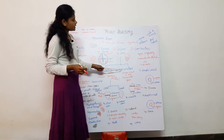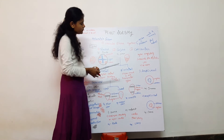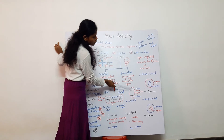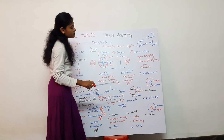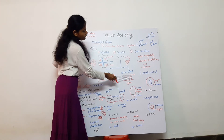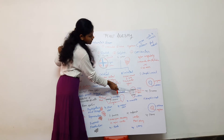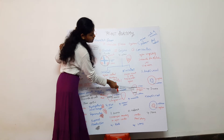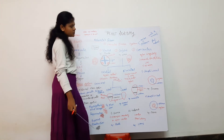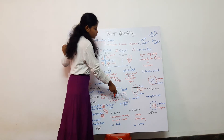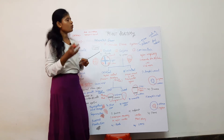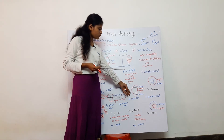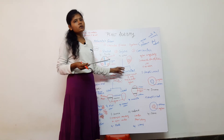The second type under conjoint is the bicollateral vascular bundle. Bi means two. In bicollateral bundles, phloem is present on both the inner and outer sides of the xylem. This type is found in the Cucurbitaceae family.